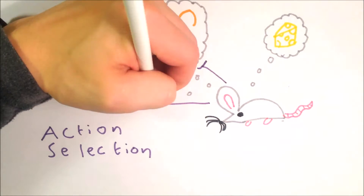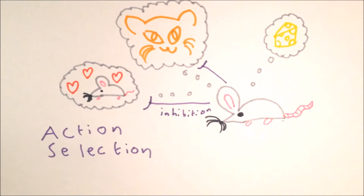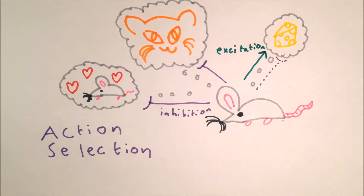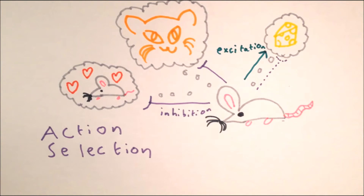It's thought that the basal ganglia achieve this by inhibiting many of the loops which flow through it, inhibiting many areas of the cortex. When an action becomes appropriate, the basal ganglia removes the inhibition from the corresponding loop, unmasking its contribution and allowing that action to be carried out.